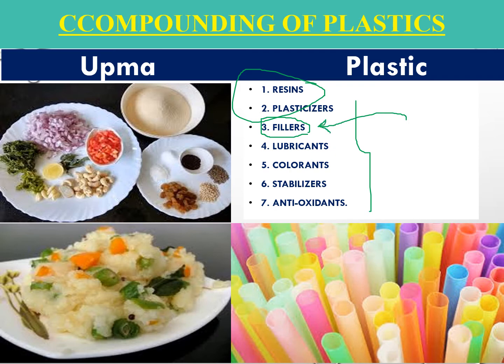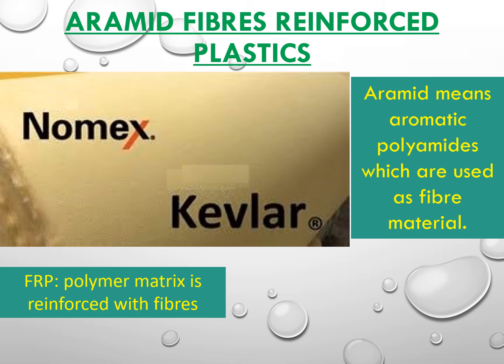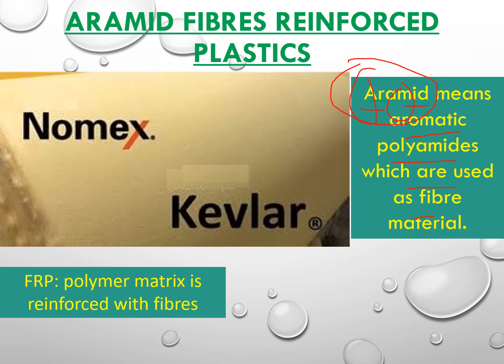The first type is aramid fibers, where we reinforce plastic with aramids. Aramid means aromatic and amide bond combined — aromatic polyamides used as fiber materials to reinforce plastics. There are two types: Nomex and Kevlar.